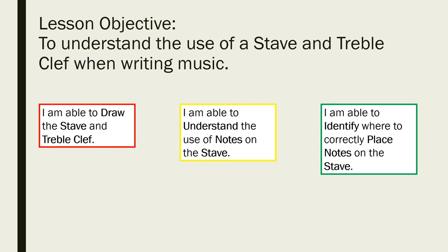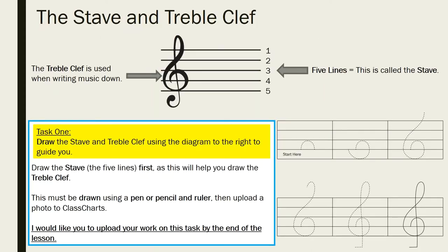For today's lesson, the lesson objective is to understand the use of a stave and treble clef when writing music. Stave and treble clef are two terms we haven't heard of before, but we will be looking into that today. In the red box on the left, you are able to draw the stave and treble clef. From that, you move to the yellow box in the middle — you are able to understand the use of notes on a stave. Then in the green box on the right, you are able to identify where to correctly place notes on the stave, which will tell you how to play a piece of music.